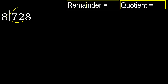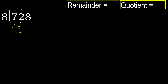8 multiplied by 9 is 72, is not greater. Subtract 72 minus 72, equals 0. Next, bring down 0. 8 multiplied by 2 is 16, is greater. Multiply by 1 is 8, is not greater. Subtract. Next.